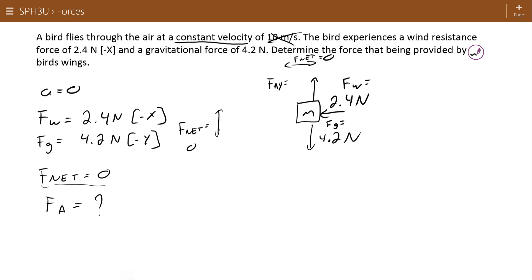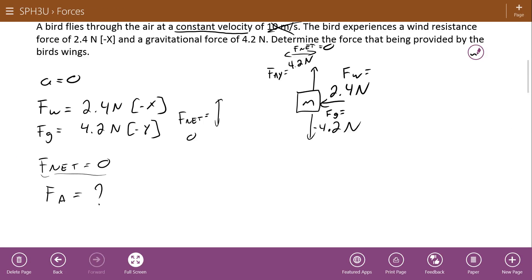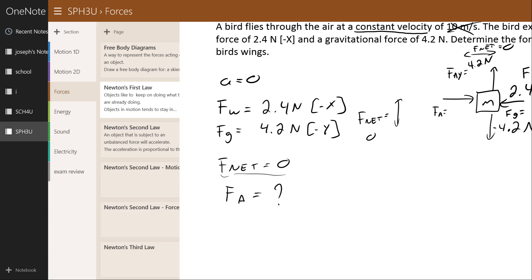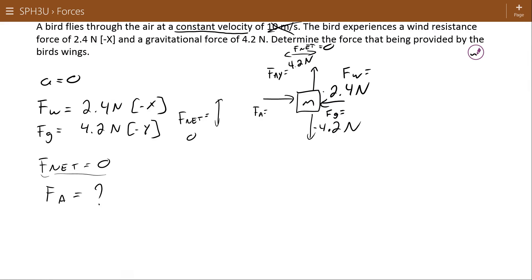So here I have an applied force, and I'm going to call that FaY to recognize that it's in the Y direction. And if I have 4.2 Newtons going down, then obviously this force has to be equal to 4.2 Newtons to balance out the 4.2 down. Similarly, if this is 2.4 to the left, then the applied force—I'll call it negative because that was called the negative x direction—then the applied force from the wings in the x direction, the FaX if you will, has to be 2.4 Newtons.